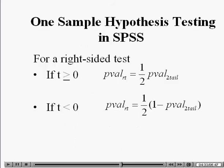However, we are not using the two-sided alternative — we were interested in the right-sided test. Here is a simple chart telling us how to calculate the p-value for the right-sided alternative based on the p-value for the two-tailed test. If the sign on the test statistic is positive, the p-value for the right-sided test is one-half of the p-value of the two-sided test. If the test statistic is negative, the p-value of the right-sided test is one-half of one minus the p-value of the two-tailed test.